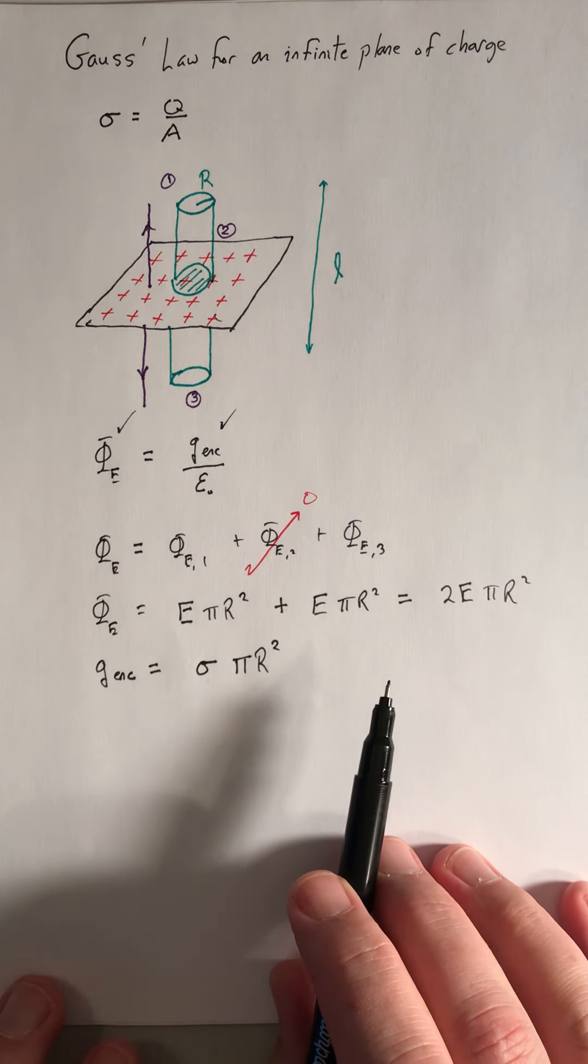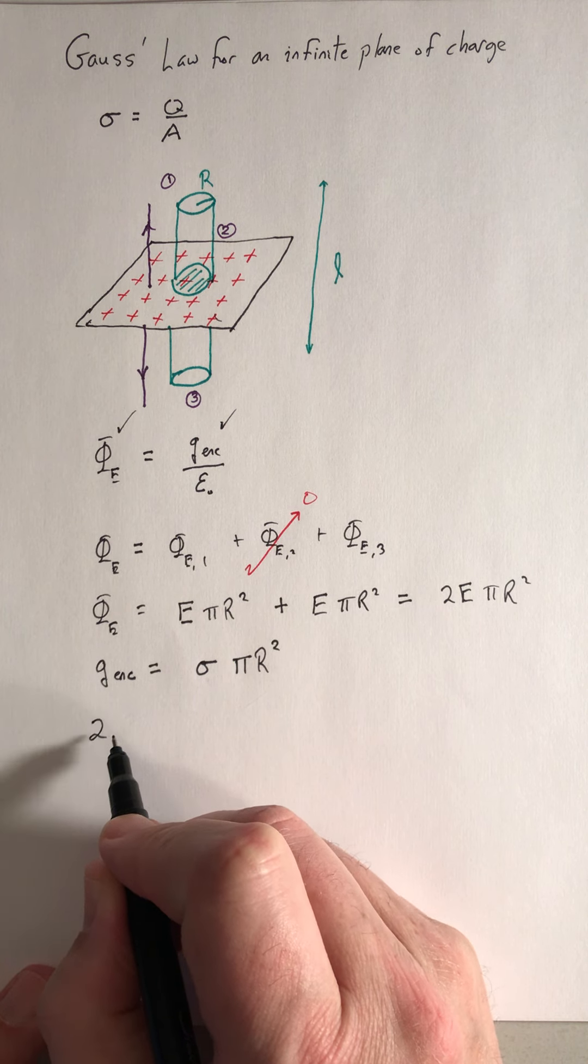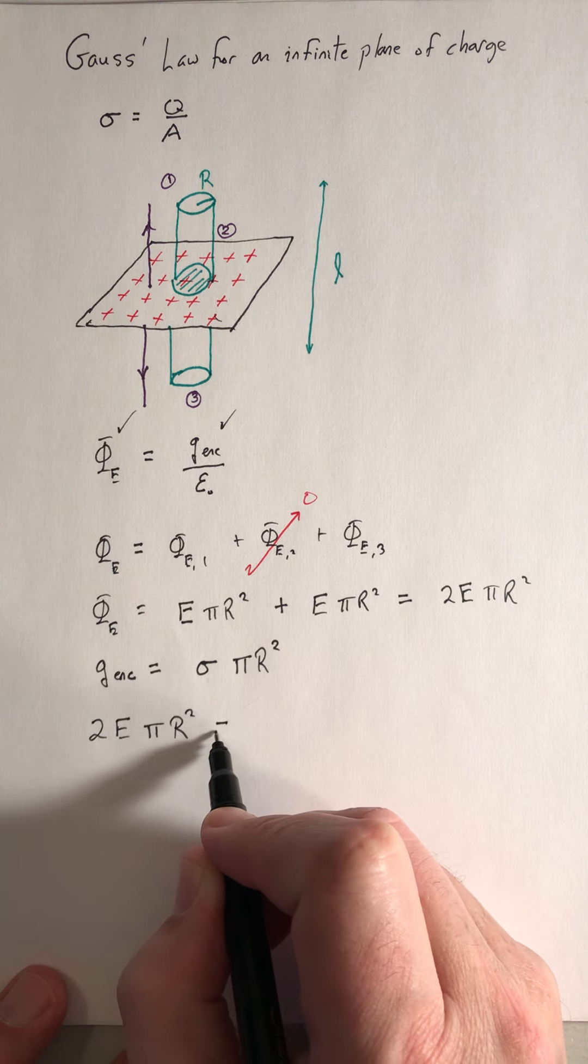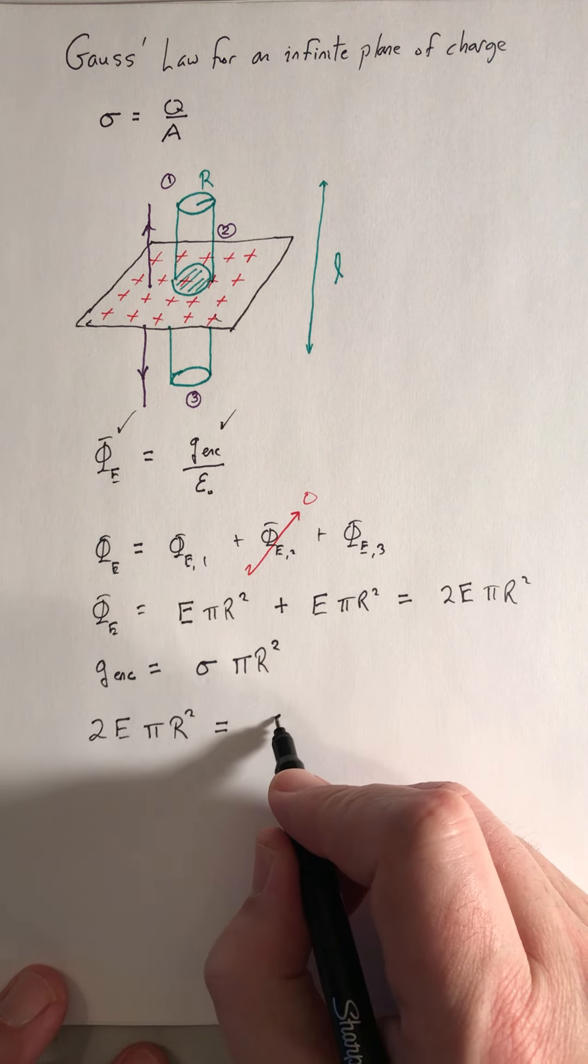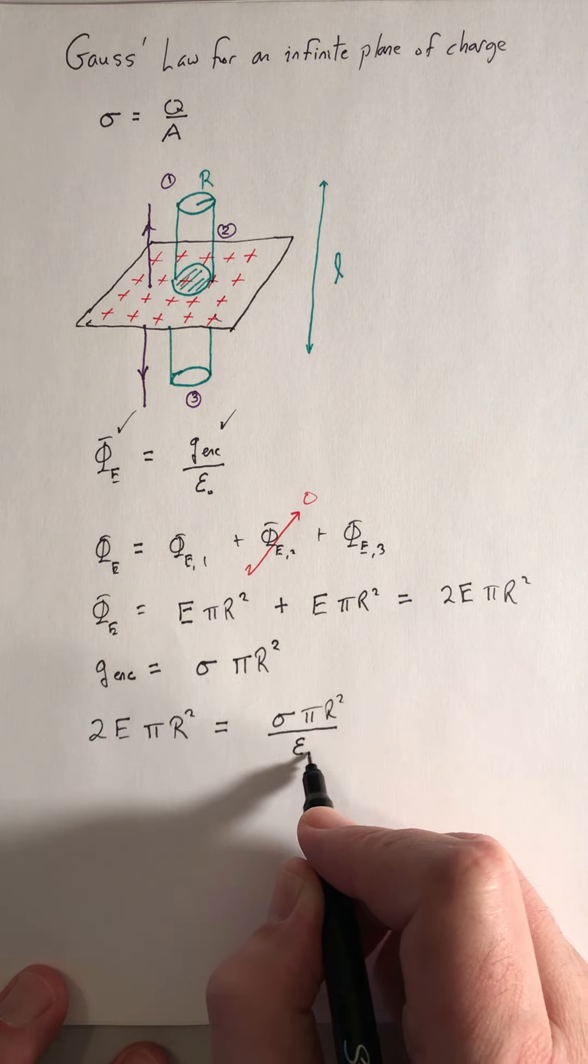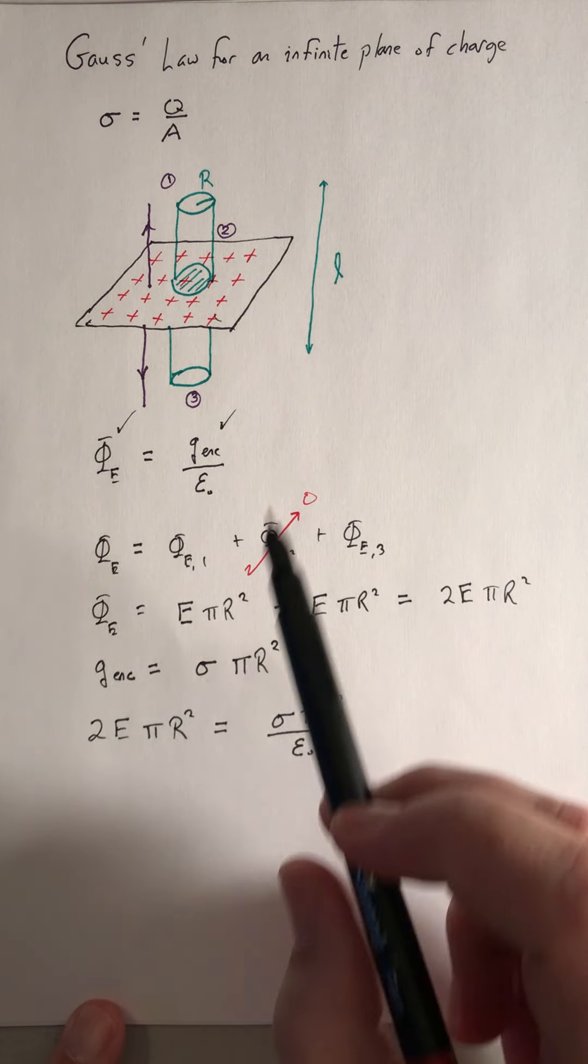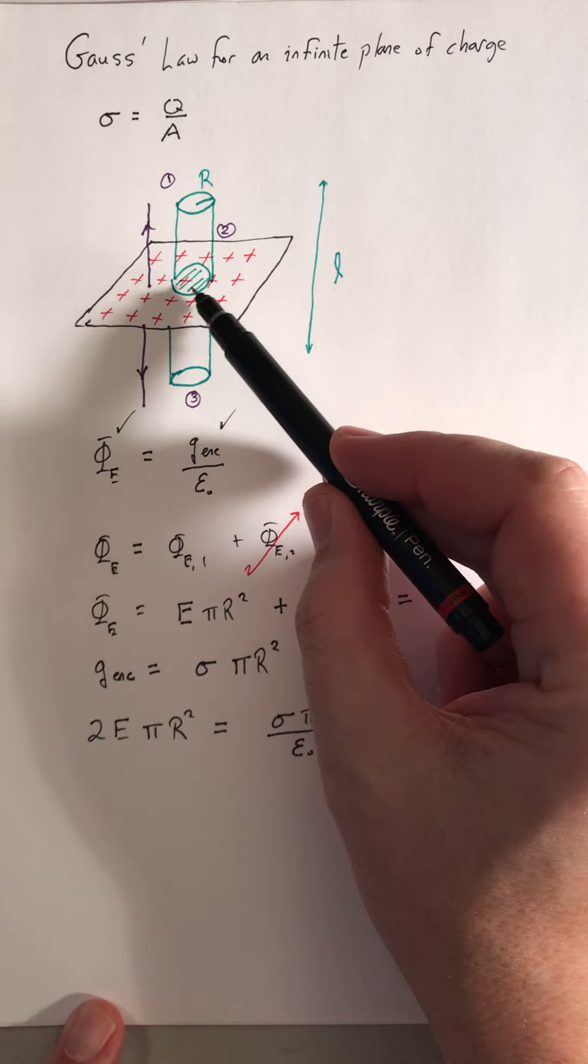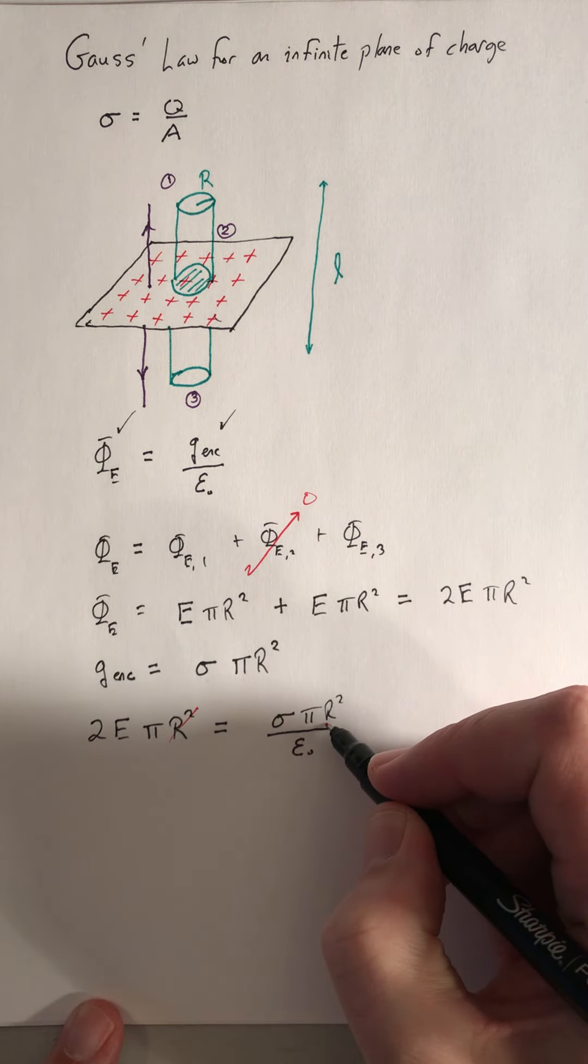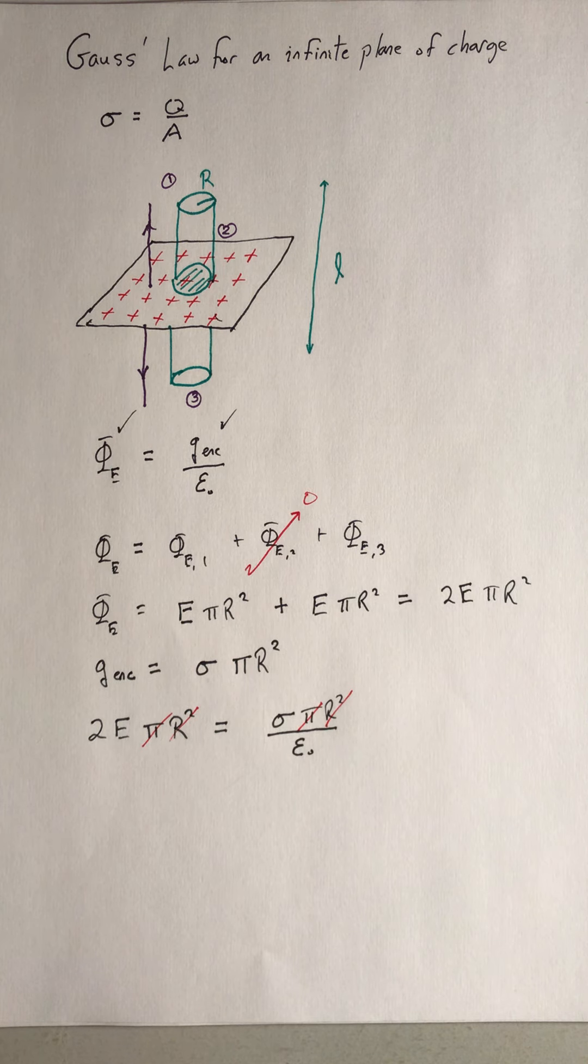So now we have everything in Gauss's law. I just set up our equation. 2 times the magnitude of the electric field times pi r squared is going to equal sigma pi r squared over the permittivity of free space, epsilon naught. So the radius of my cylindrical surface is arbitrary. It's on both sides of the equation, so it cancels out. Pi cancels out. Just move the two to the other side.